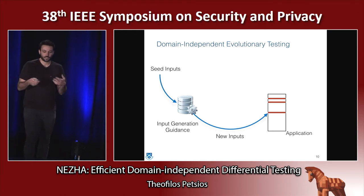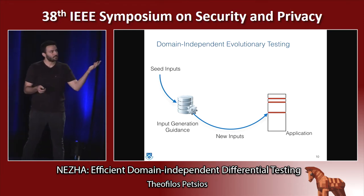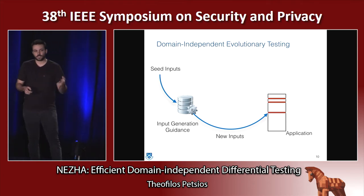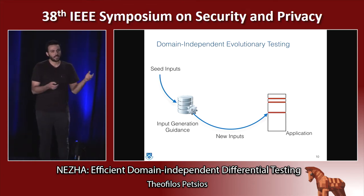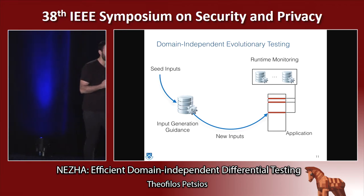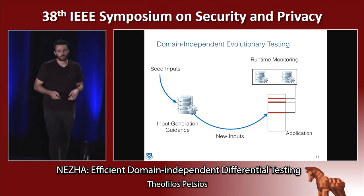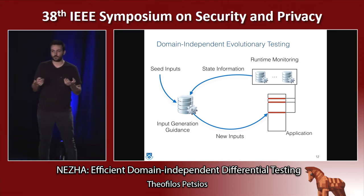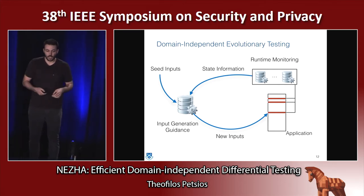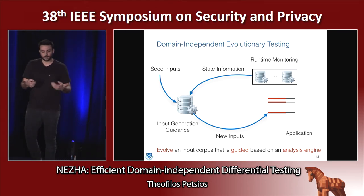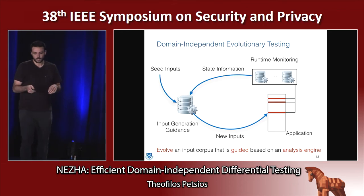How can we achieve this domain independence? One technique that has been shown to be very successful in this domain is evolutionary testing. The way this works is that you start with a corpus of seeds, then pass these inputs to your application, which has been instrumented to give you some information about its state — whether you discovered something new in the control flow graph or whether you have some sort of memory error. You propagate this information back to your guidance engine, getting a sense of which inputs were most useful for your analysis, and you evolve your corpus to trigger more interesting behaviors inside your application.